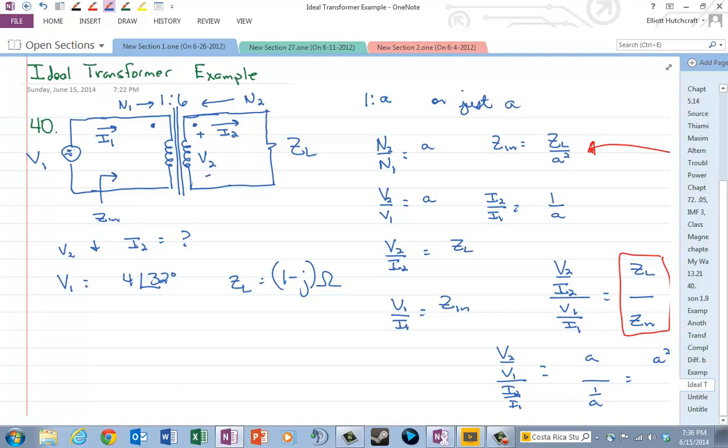Okay, so in this problem we see that if we're trying to solve for V2 and I2, well obviously we can take ZL and bring it back to the input side, but that's really not going to help us. In other words, I'm talking about taking this 1 minus J ohm from here and moving it over to Zn using our Zn is equal to ZL over A squared, but all that's going to do is allow us to find I1. And that's not really what we're after. We're after I2 and V2, so that's really not something we can do. Although it's a perfectly reasonable thing to do, it's not anything wrong with that.